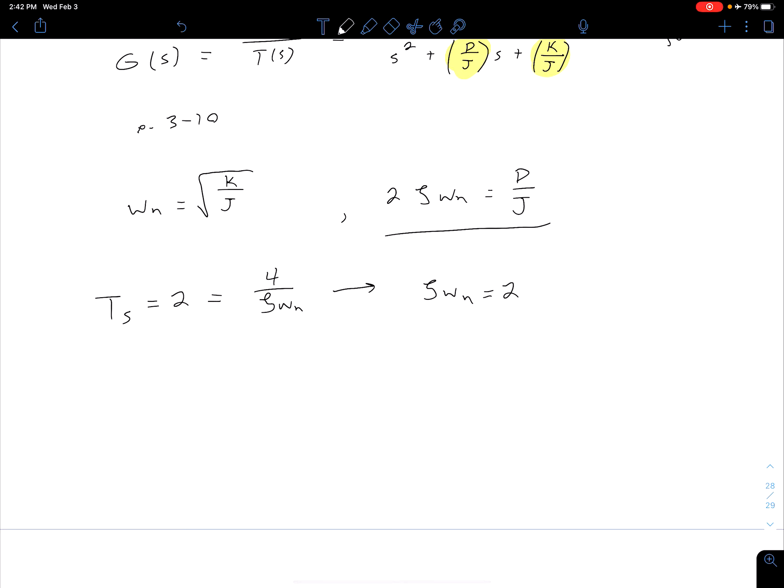Well we then know from this that our zeta*omega_n has to be equal to 2. So we can plug that into this equation. We can say that D/J which is equal to 2*zeta*omega_n has to be equal to 2 times 2 which is equal to 4. And so let's call that equation 1.